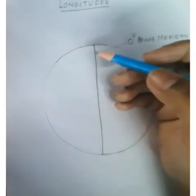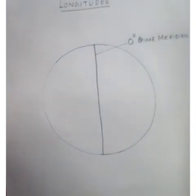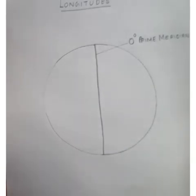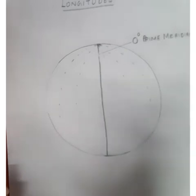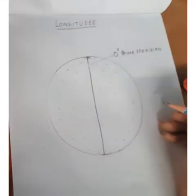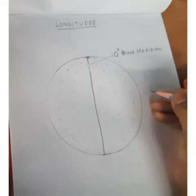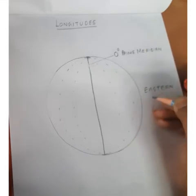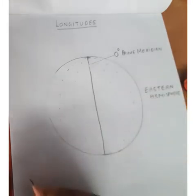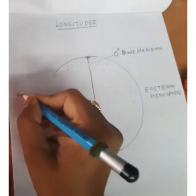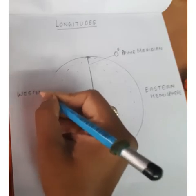This line divides the Earth into two equal hemispheres — the eastern hemisphere and the western hemisphere. On the right side of your circle, write down 'Eastern Hemisphere', and on the left side of your circle, write down 'Western Hemisphere'.